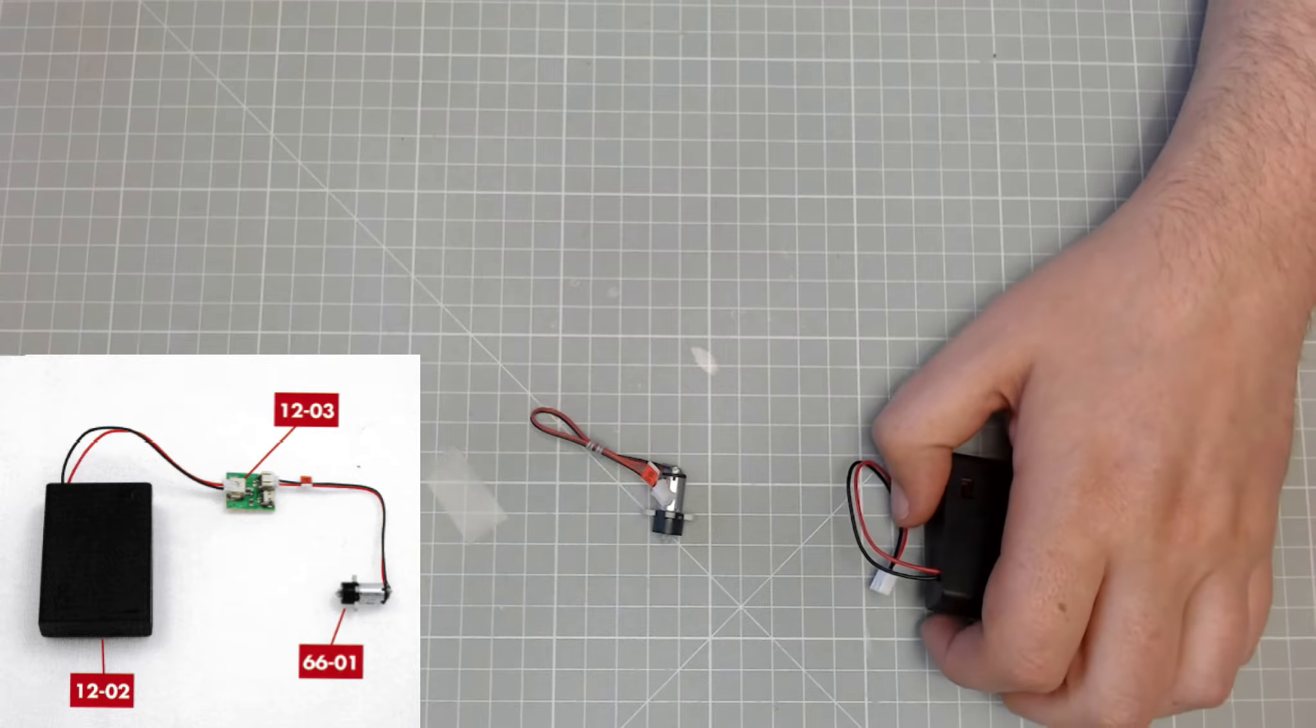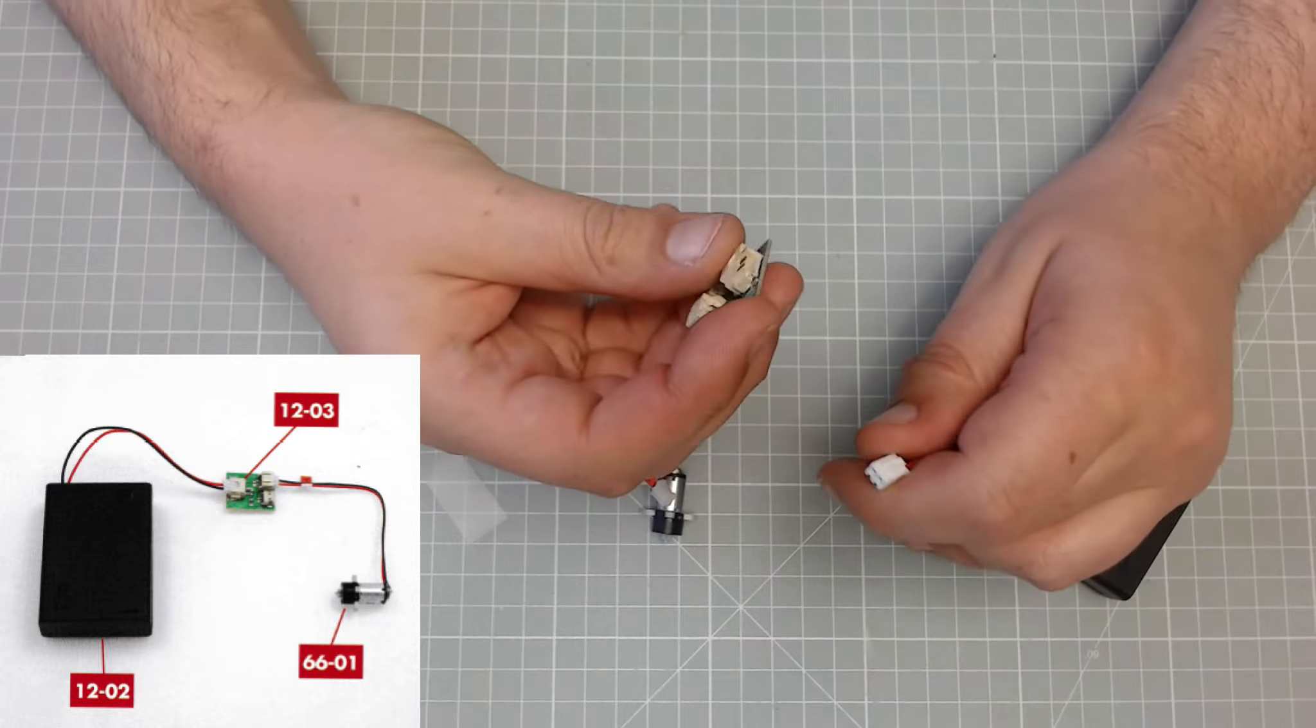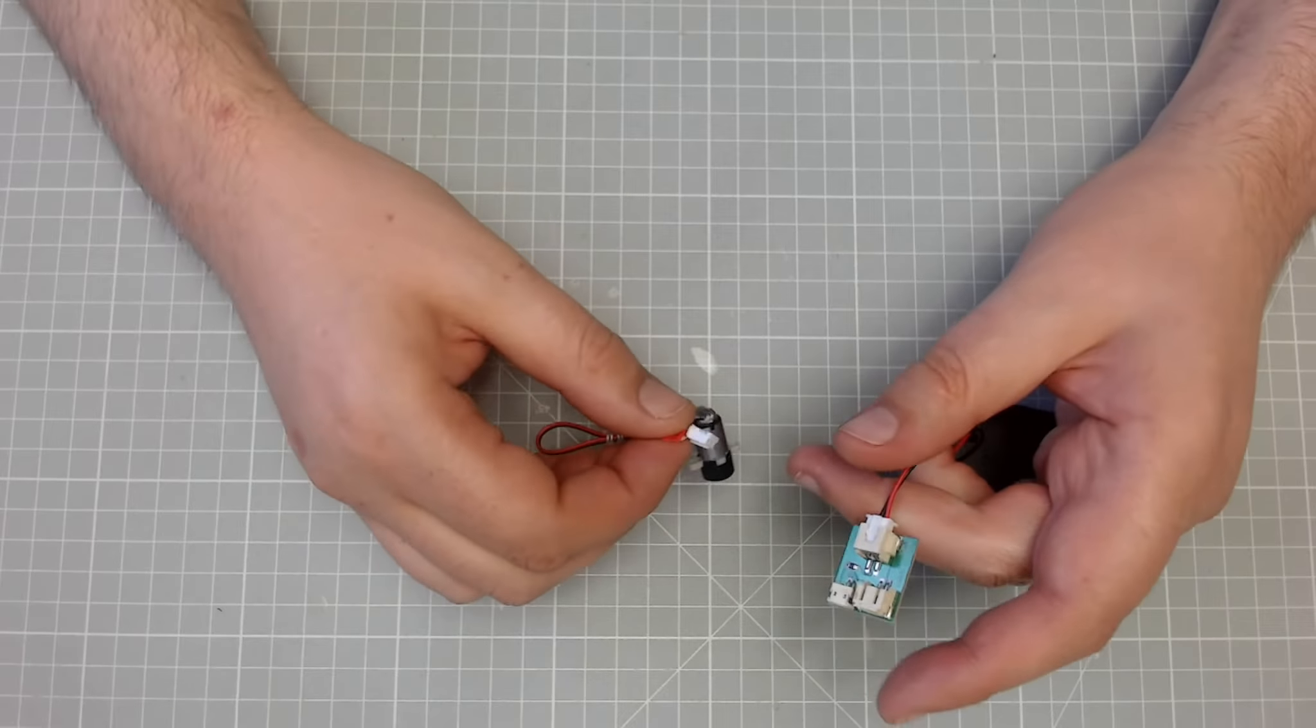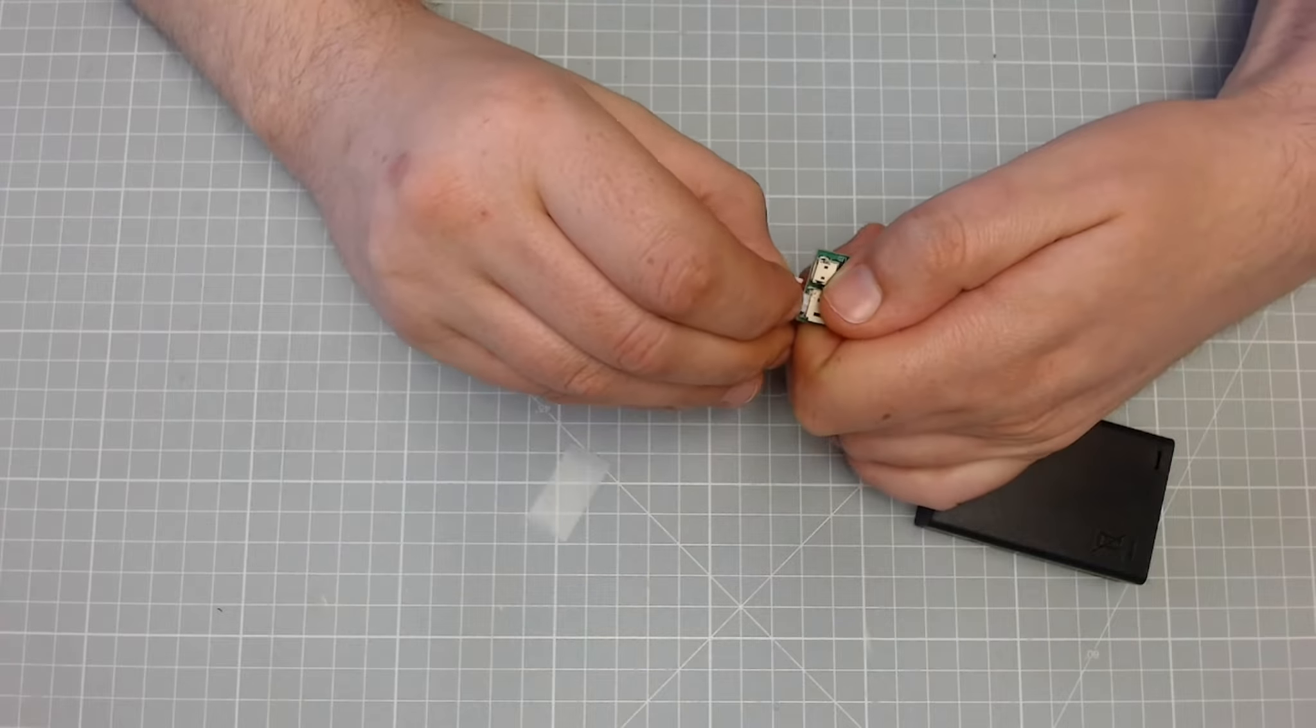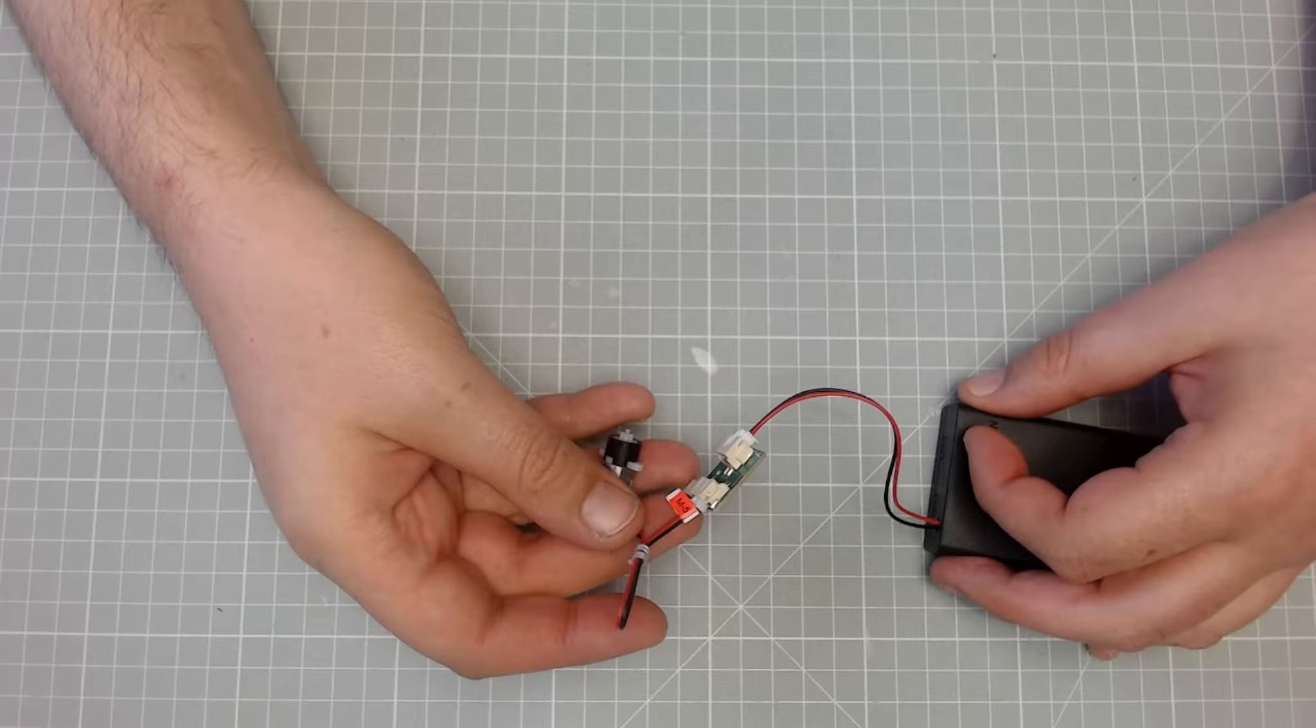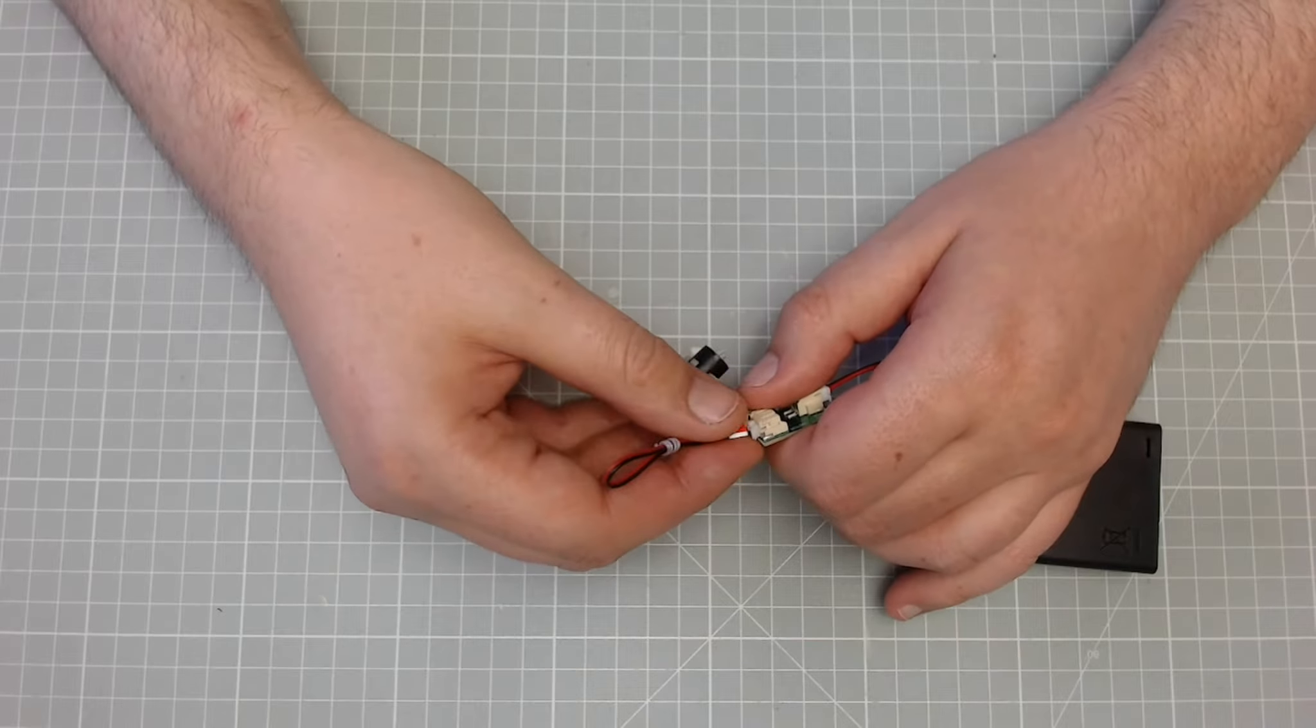Okay, so what we need to do next is test the motor. We've got the battery box here, we've got the test board, and then we're just going to slot in this motor just to give it a test. Switch it on and as you can see, that moves around. Okay.